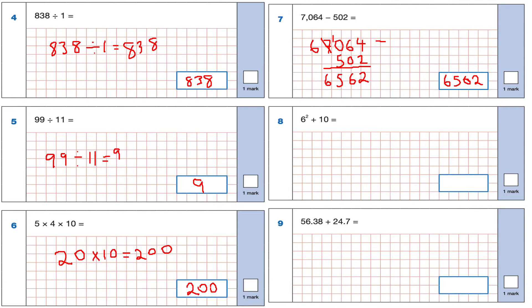Question 8: 6 squared plus 10. 6 squared means 6 times 6, which is 36. 36 add 10 is equal to 46.